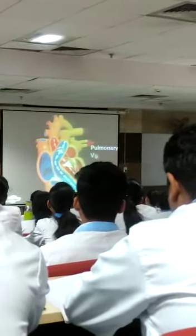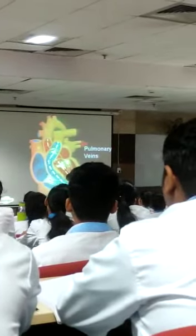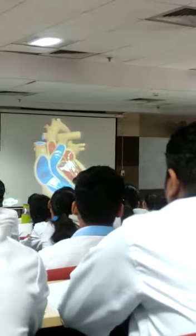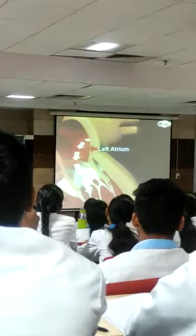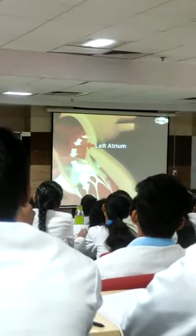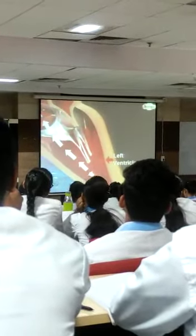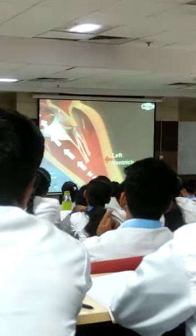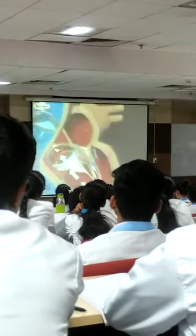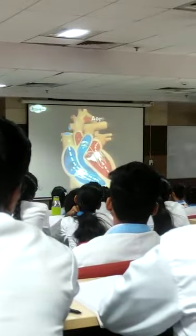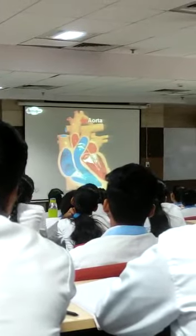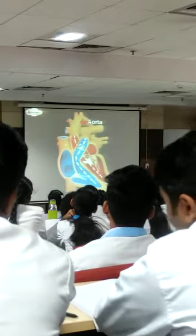After oxygenation, blood travels through the pulmonary vein and is received in the upper left chamber, that is the left atrium, which pumps it into the left ventricle below. Then it is pumped into the aorta, which sources many arteries that carry oxygenated blood to different parts of the body.